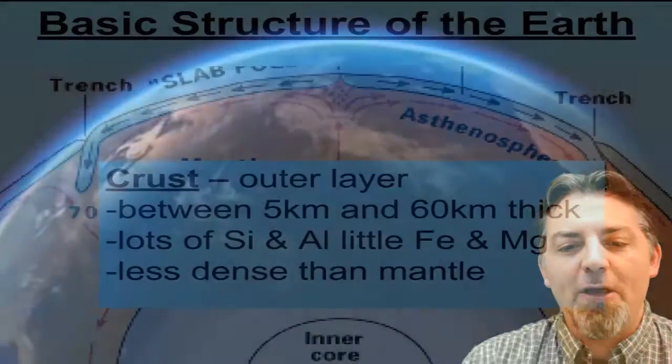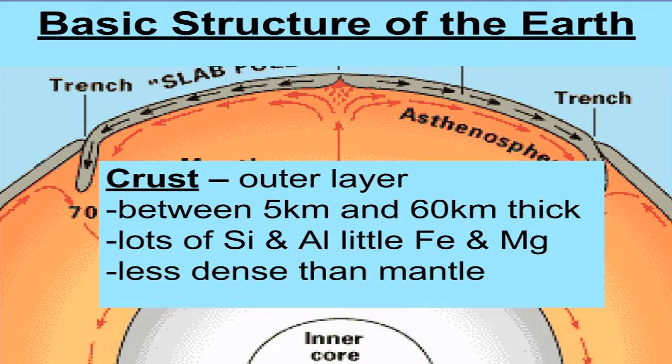Now as we go further out, beyond the mantle is what we call the crust. Now the crust, this is the outer layer of the Earth. In some places, it's relatively thin, as thin as five kilometers. Other places, like where there's mountains, it's relatively thick, as thick as 60 kilometers.